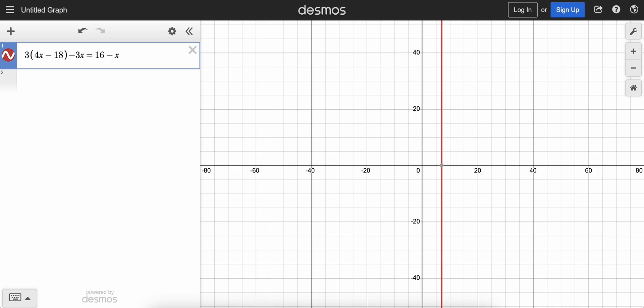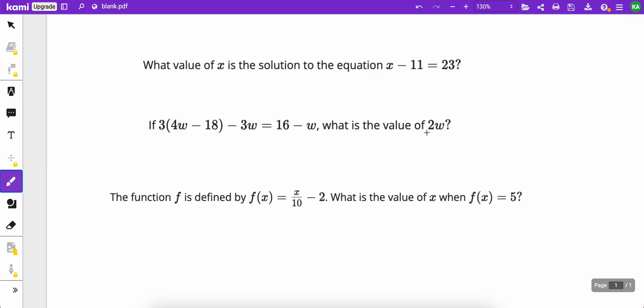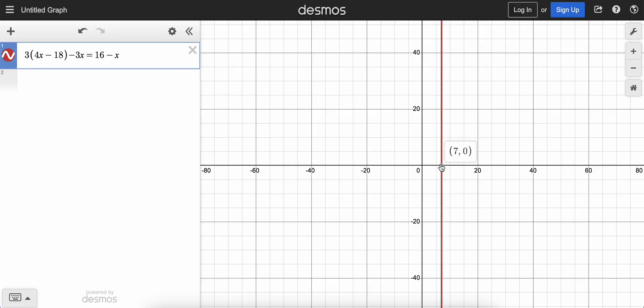But notice in the question, you just have to be careful of this, it says what's the value of 2w? So remember, we changed out w for x. So really, 2x is what we're looking for, not x. So if x is 7, then 2x would just be double that, or 14. So just be on the lookout for those. But this was a lot easier than having to solve this out ourselves.